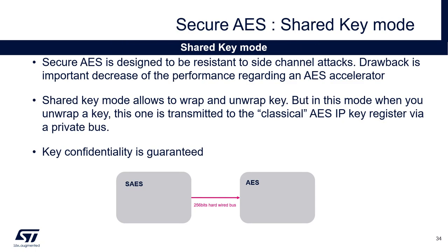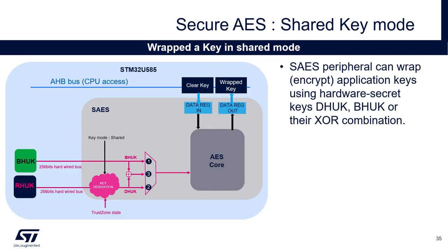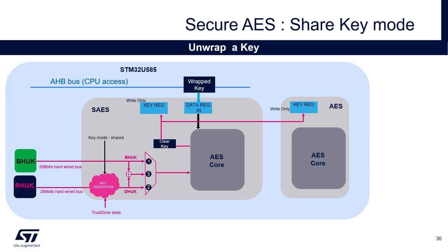Let's see the last possible mode of the Secure IOS: the shared key mode. It is quite similar to the wrap key mode — it allows wrapping and unwrapping keys — but in this mode, the unwrapping result is shared with the classical IOS IP via a private bus. This allows the IOS IP to use an unwrapped key without exposing its value. Remember, the classical IOS IP has not been designed to be resistant to side channel attacks, but it offers better performance. To wrap the key in share mode, the process is similar to wrap key mode — the only difference is in the result of the key derivation of the root hardware unique key, since the key mode input differs. When unwrapping, the result is transmitted to the IOS IP via private bus, which can then encrypt or decrypt data with better performance but a lower level of resistance to physical attacks.